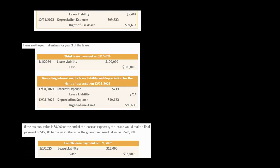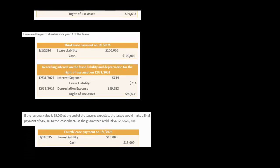Finally, when all is said and done, if everything happens as expected, at the end of the lease the residual value turns out to be $5,000, and so the lessee makes a payment of $15,000 to make the lessor whole: we guaranteed you $20,000, but it's only worth $5,000, so here is $15,000. The lessee reduces their cash by $15,000, reduces their liability by $15,000, the lease liability goes to zero, and the right-of-use asset will no longer appear on the statement of financial position.